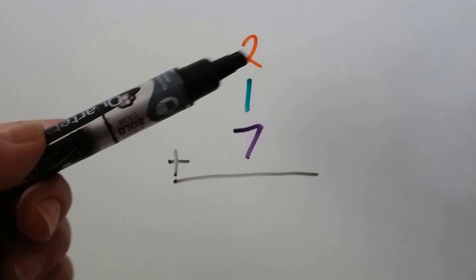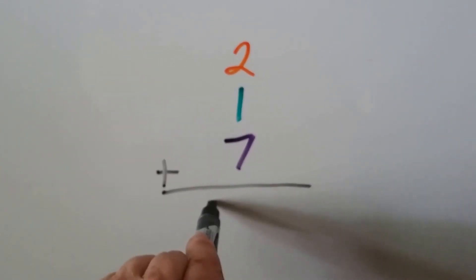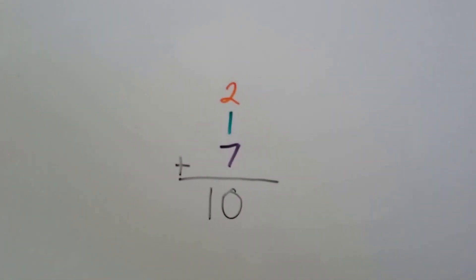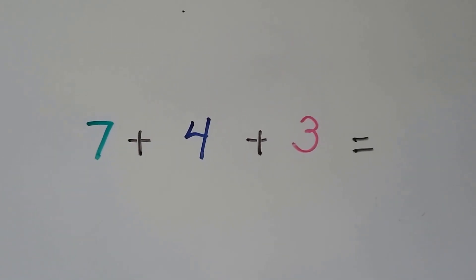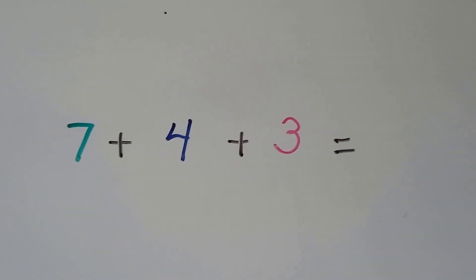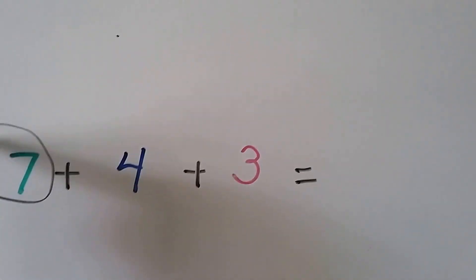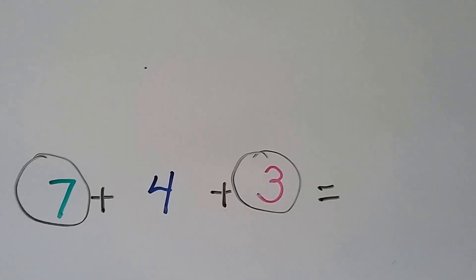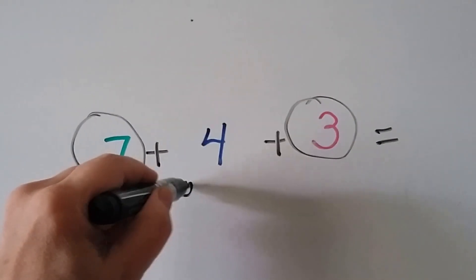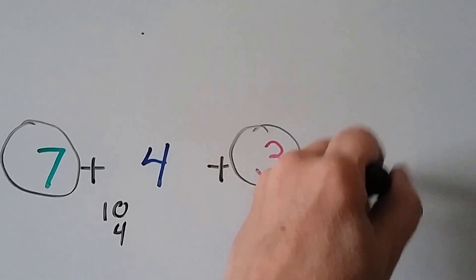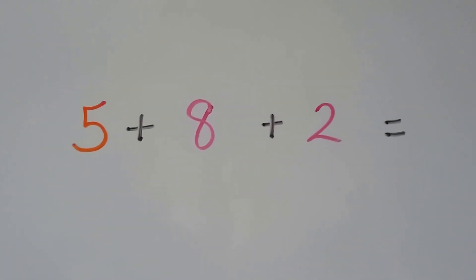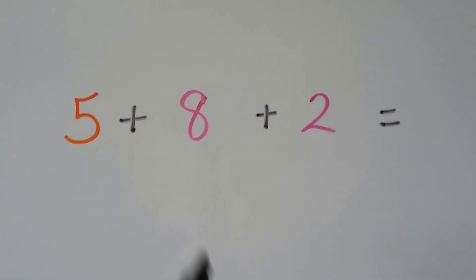Do you see any compatible numbers here? I don't see anything that equals ten right away, but we could say seven, eight, nine, ten — so the whole thing equaled ten. That's okay, we just add the numbers in whatever order is easiest. How about here — do you see some compatible numbers? I tried to trick you with the colors. The seven and the three make a ten, then all we have to do is add the four, so we have ten plus four, giving us fourteen.